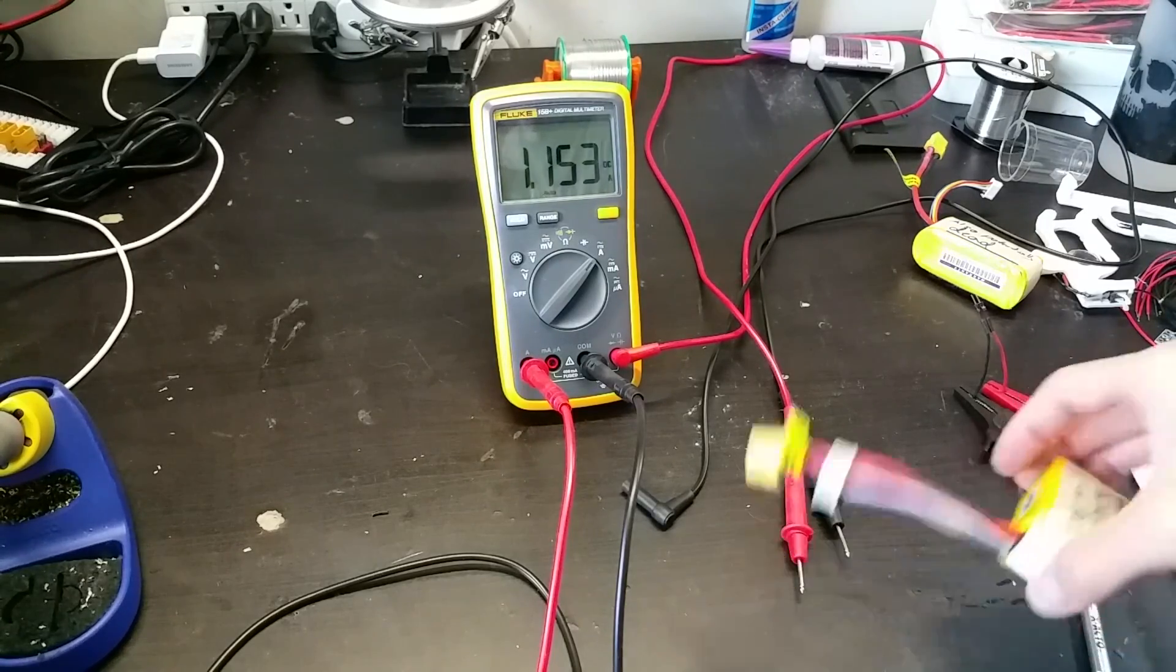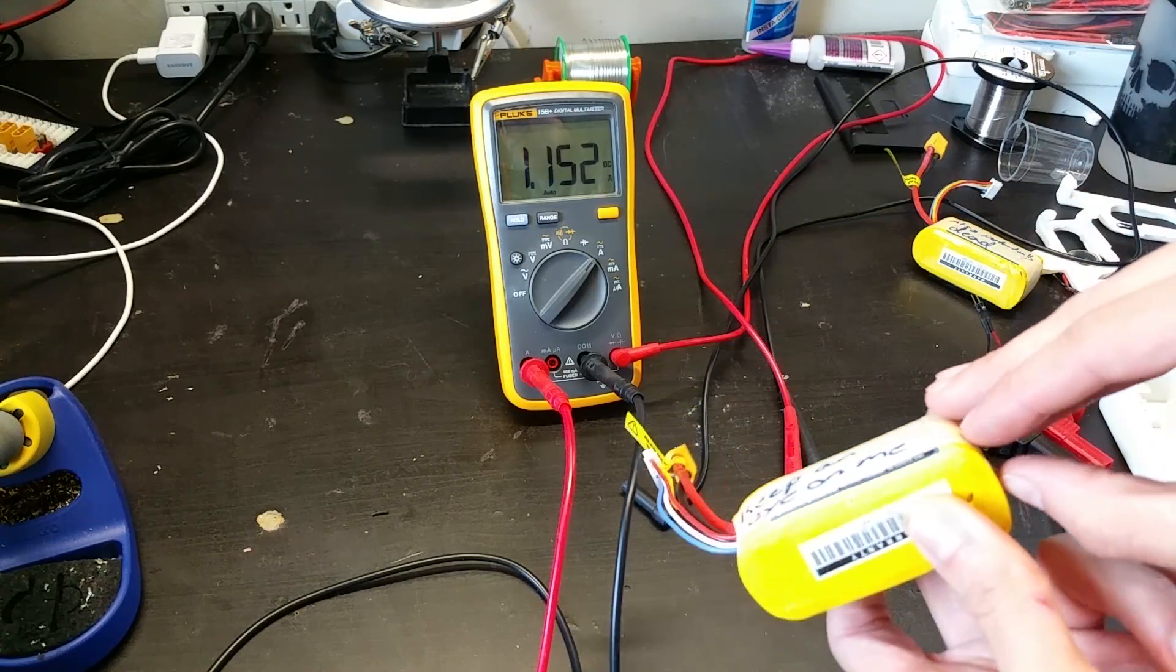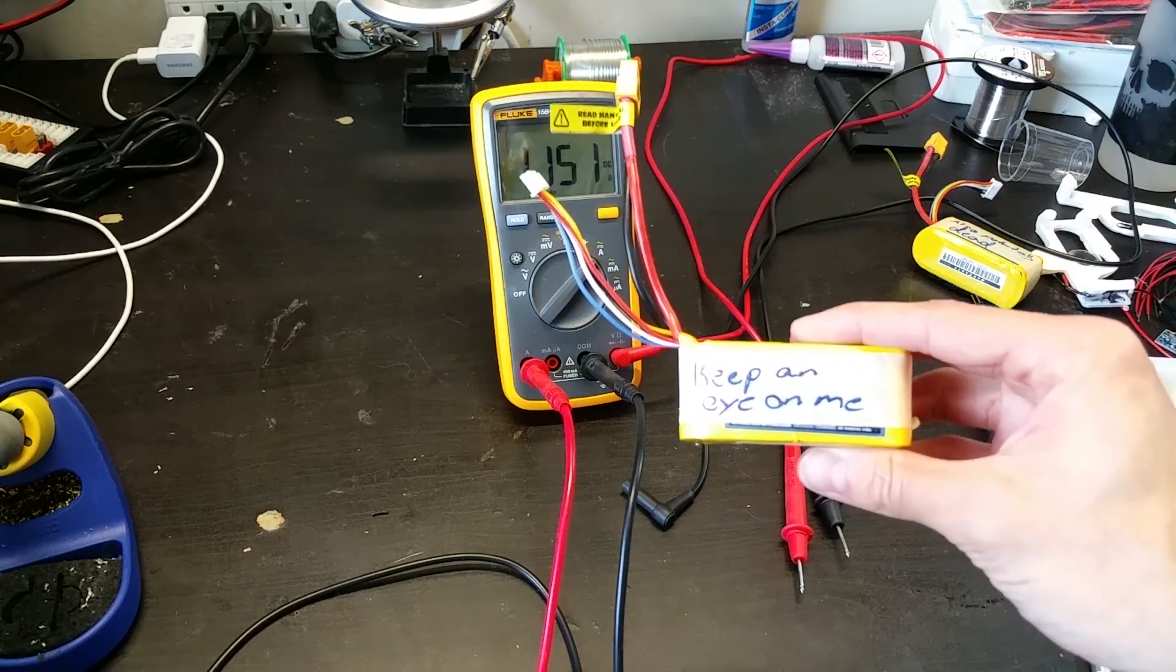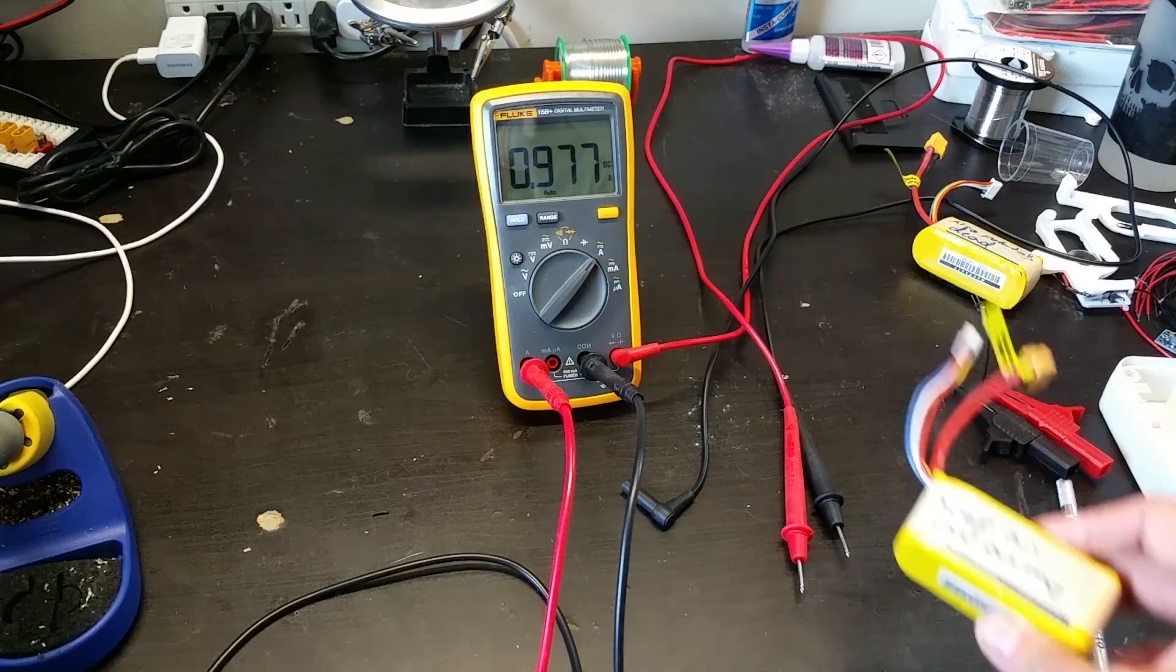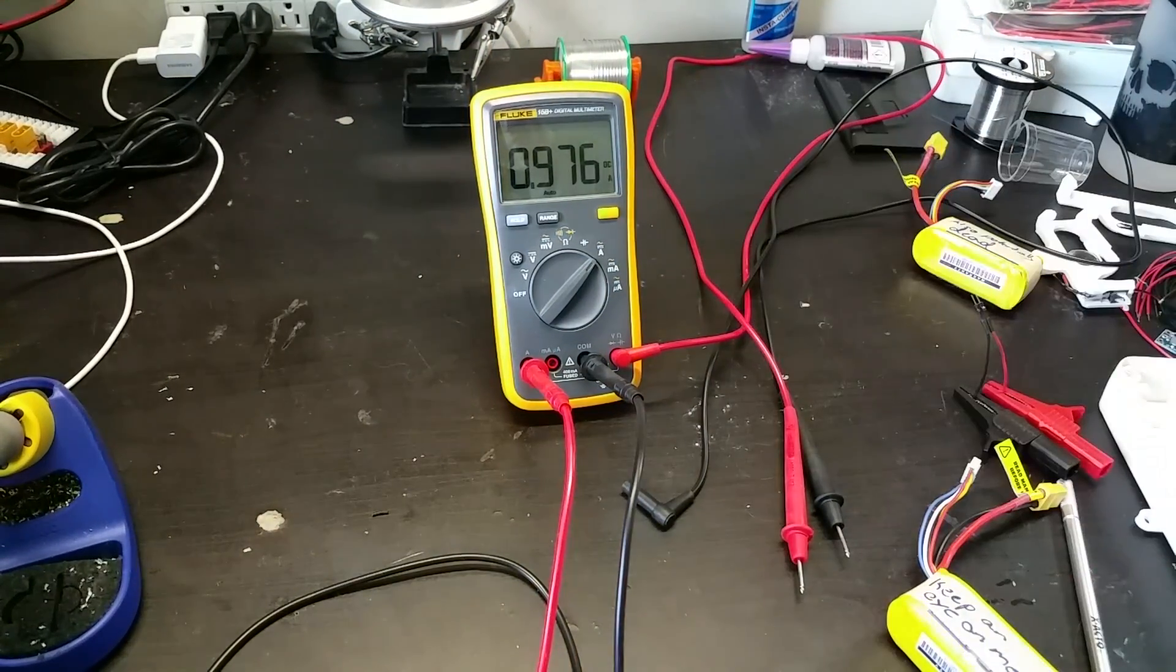So in the case of this, you want to limit it based on the capacity of your battery. This is a 1300 mAh battery, meaning that its 1C rating, which is usually the maximum charge rating you want to do, is 1.3 amps. So I'm just going to be going at 1 amp.